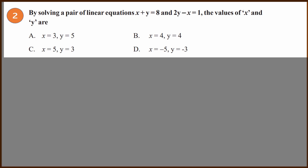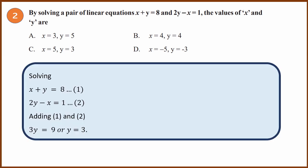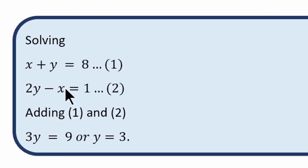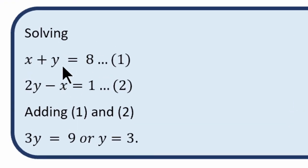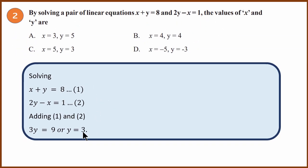Question number two: by solving a pair of linear equations x + y = 8 and 2y − x = 1, find the value of x and y. If we solve this, the only solution where y equals 3 is option C. So we don't have to solve for x — checking the answer choices, the only solution where y = 3 is C. So the answer is C.